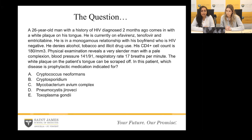His CD4 count is 180. On physical exam, he is a very slender man with a pale complexion. His blood pressure is 141 over 91, respiratory rate is 17, and the white plaques on the patient's tongue can be scraped off. In this patient, which disease do we need to give prophylaxis for?